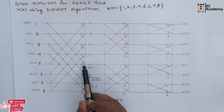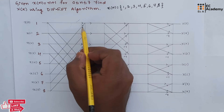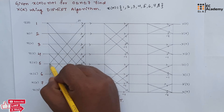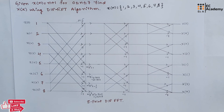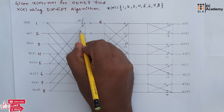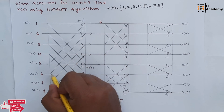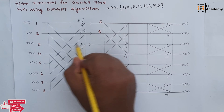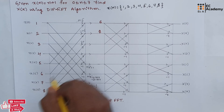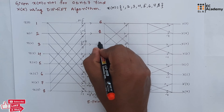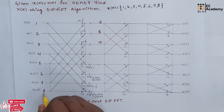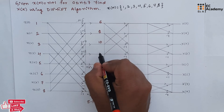To solve this problem, we just need to follow the arrow marks to get the answer. The output at the first point is 1 plus 5, which is 6. The output at the next point is 2 plus 6, which is 8. The output at the next point is 3 plus 7, which is 10. The output at the next point is 4 plus 8, which is 12.